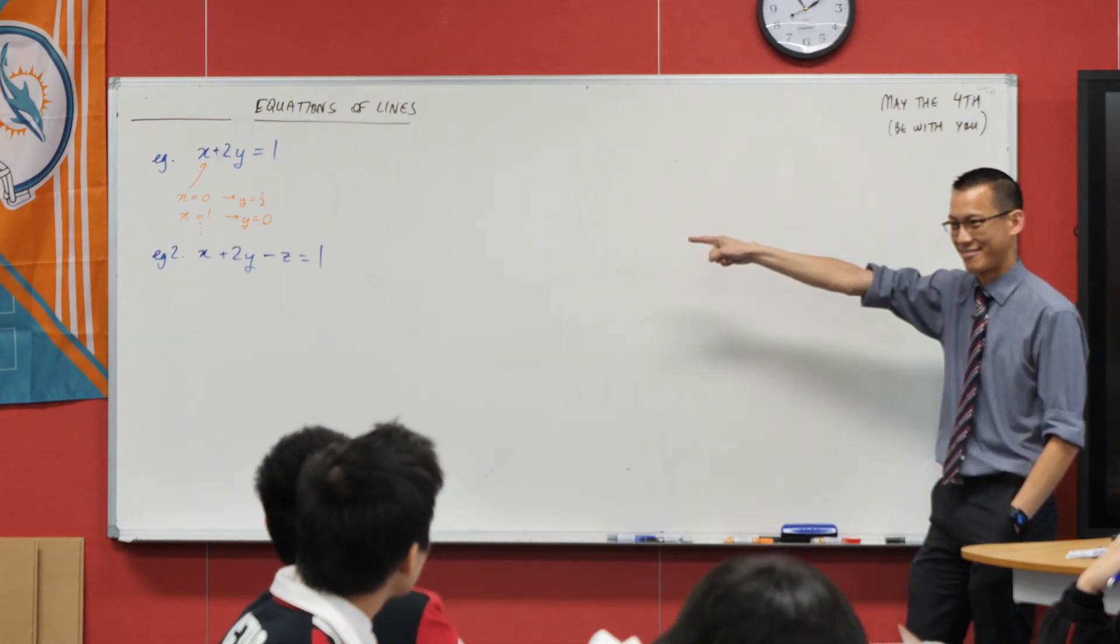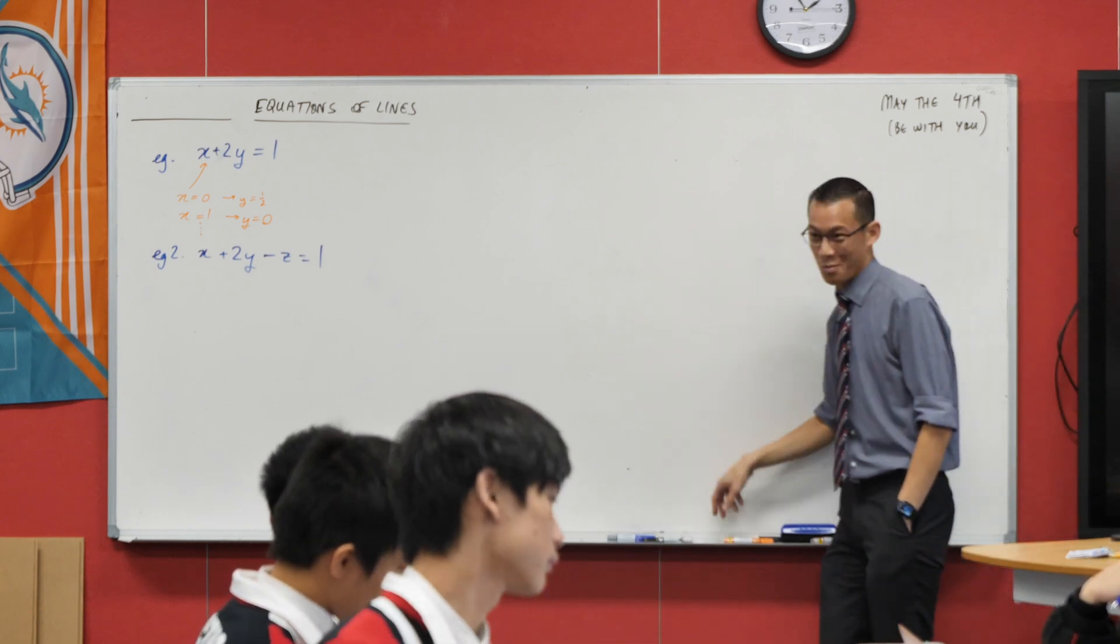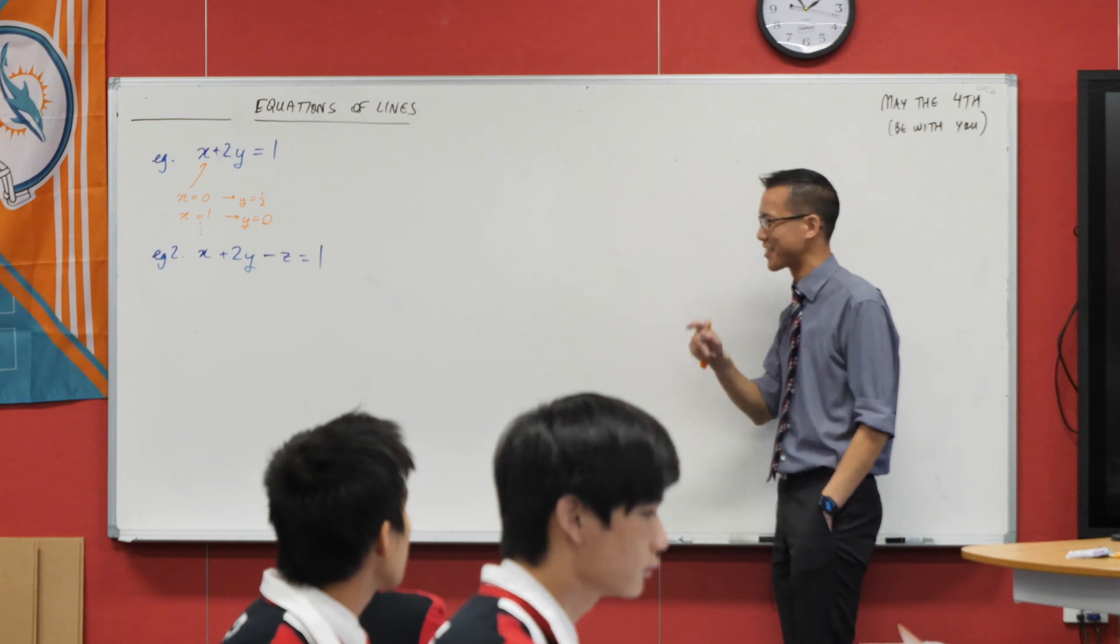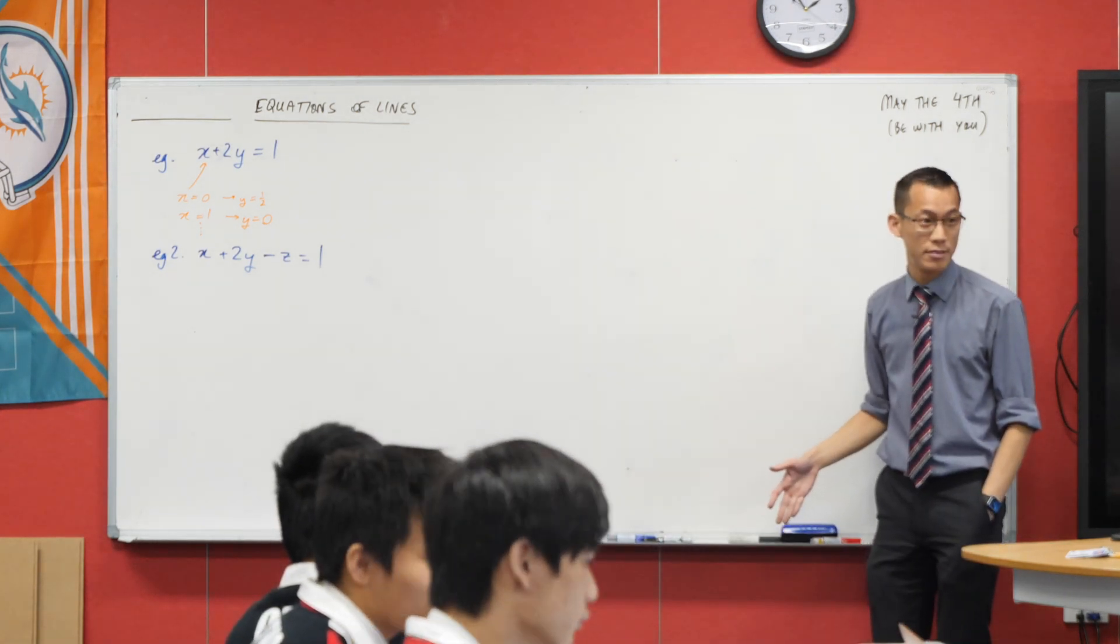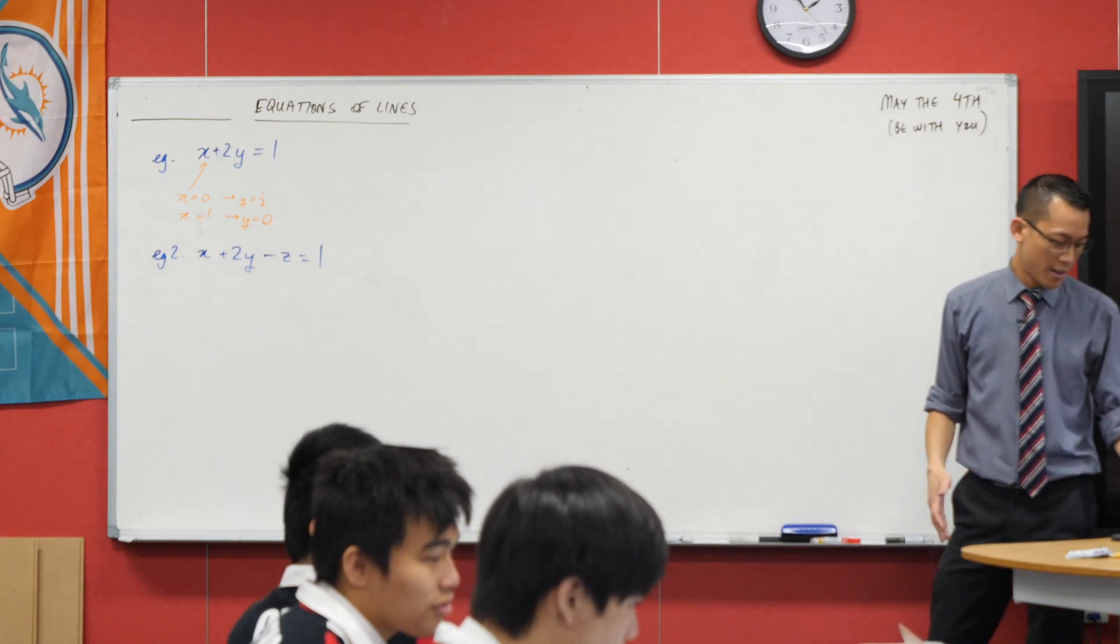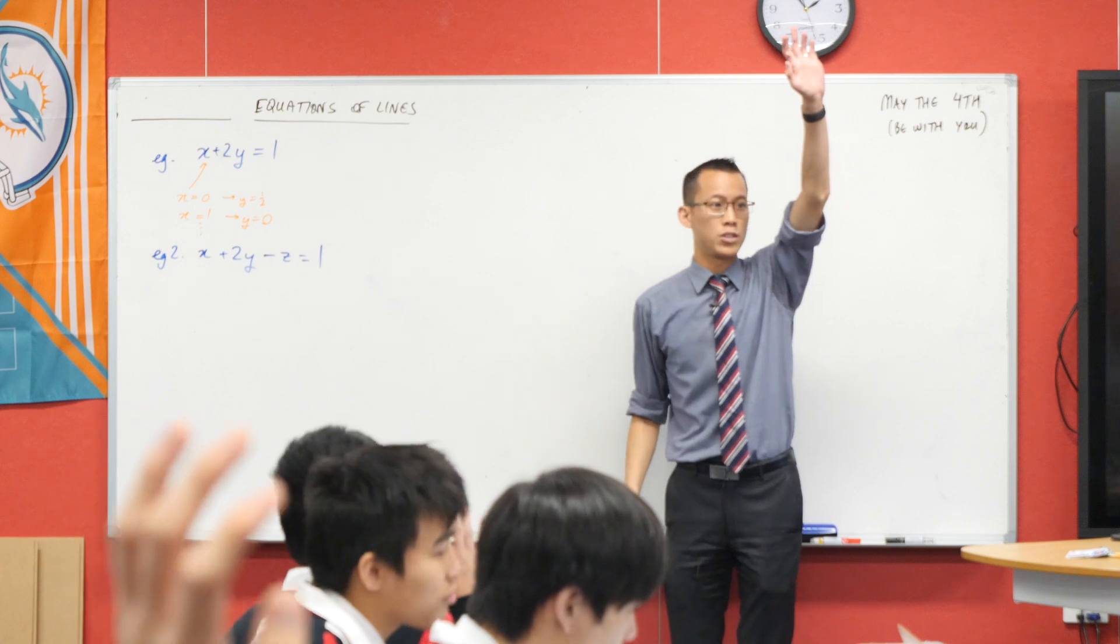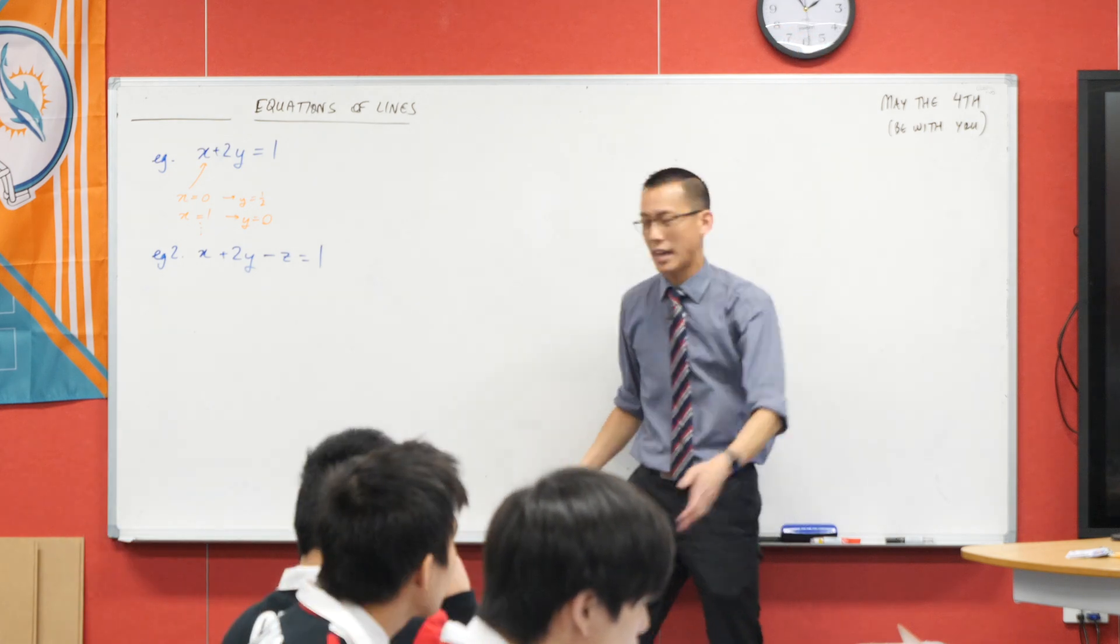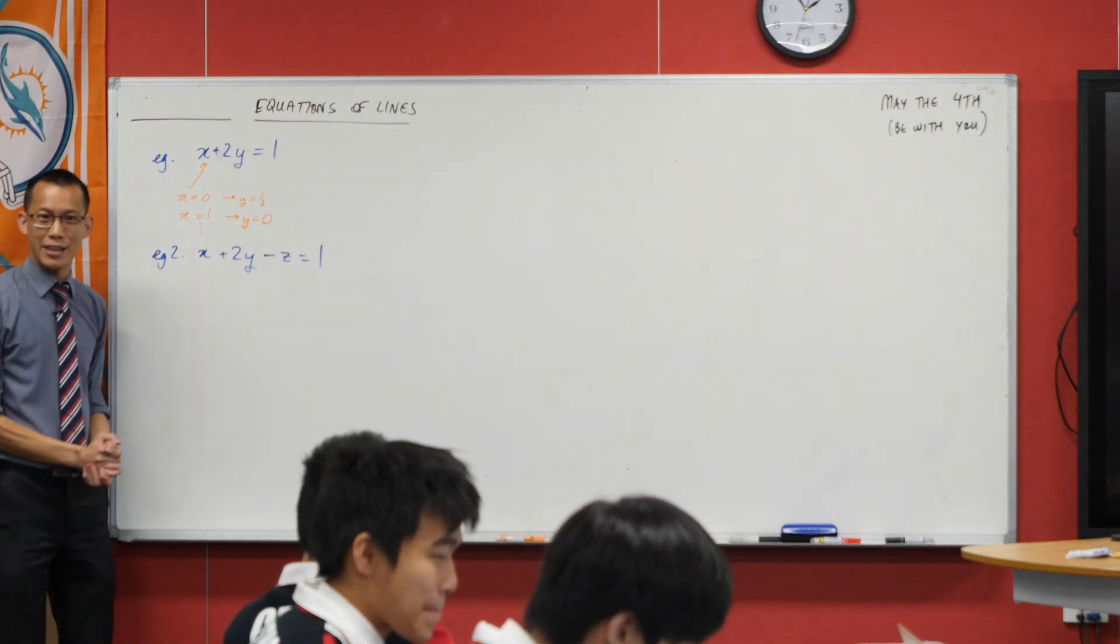Now, if you have successfully opened up 3D Geogebra, go ahead in the top left hand corner, and just type in this as it says. x plus 2y minus z equals 1. Did you graph something? Did you get it? 3D Geogebra. Hands up if you've got something there.